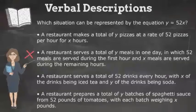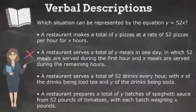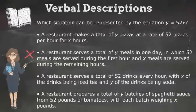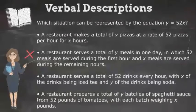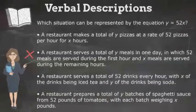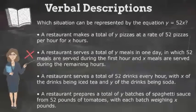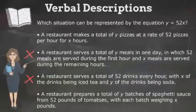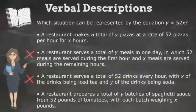Next, we have a restaurant serves a total of 52 drinks every hour, with x of the drinks being iced tea and y of the drinks being soda. But this answer choice has 52 as the rate, but now x and y represent part of the whole. But y is supposed to represent the total, not just part of it. And x shouldn't be a part either. So we can eliminate this answer choice as well.